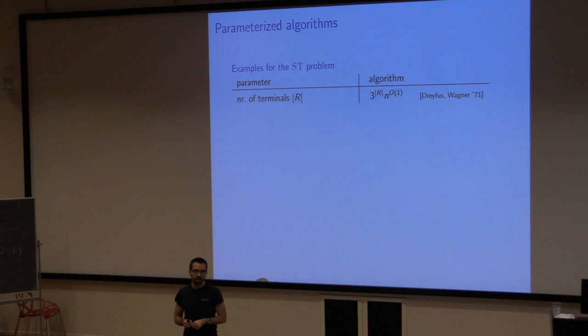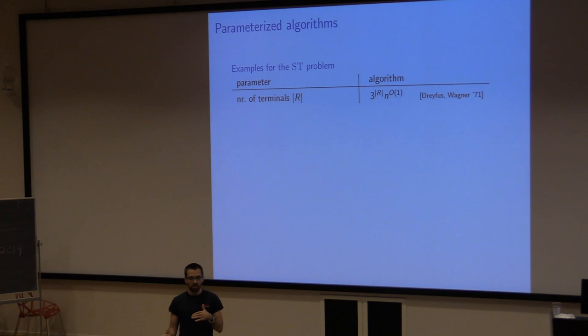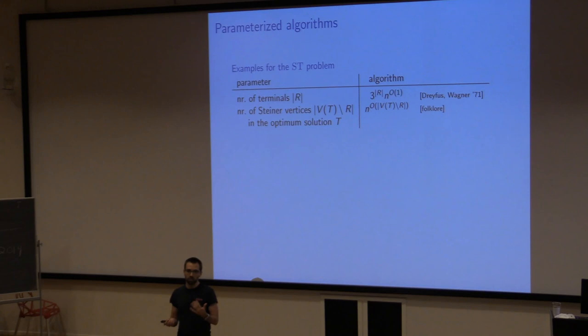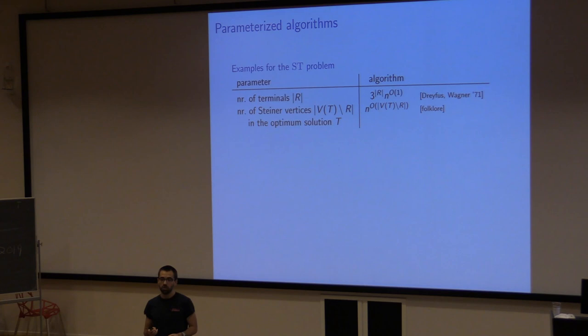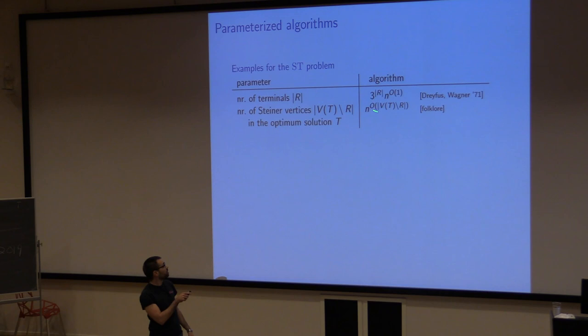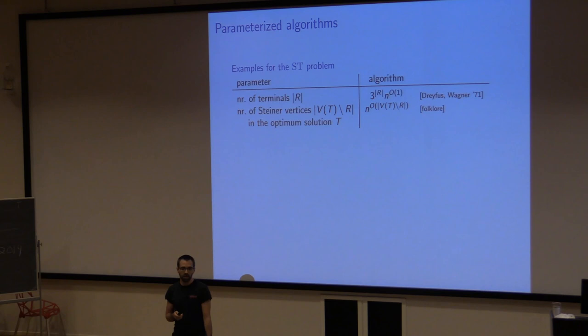What about parameterization? A well-studied parameter is the number of terminals, and there is the classic result of Dreyfus and Wagner which gives an FPT algorithm. It also makes sense to look at a dual parameter: the number of Steiner vertices in the optimum solution. It's not hard to get an XP algorithm here — guess which Steiner vertices are in the optimum, add the terminals, compute a minimum spanning tree.